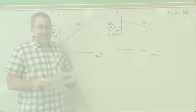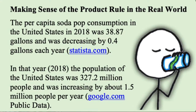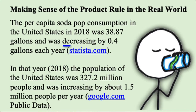Here's the problem statement. The per capita soda pop consumption in the United States back in 2018 was 38.87 gallons. Now per capita means per person, so if you average it out, every person in the United States on average consumes 38.87 gallons of soda pop. But this amount was decreasing by 0.4 gallons each year.